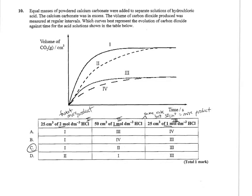Number 10, same equation. Equal masses of powdered calcium carbonate were added to separate solutions of hydrochloric acid. The calcium carbonate was in excess. That's important. So HCl concentration and temperature will be factors. Volume of HCl won't be a factor for rate, but it could affect yield. They want to know which curve best represents the evolution of carbon dioxide against time for the acid solution shown in the table.